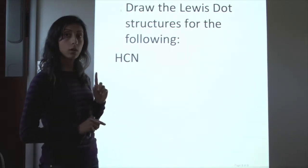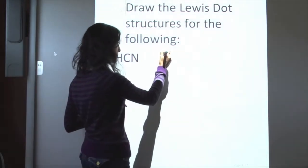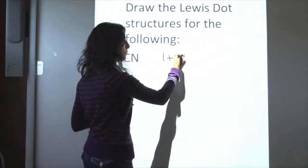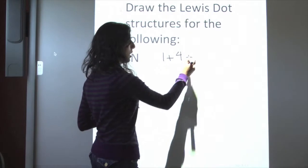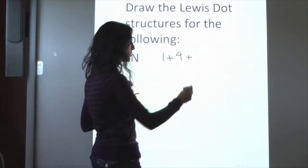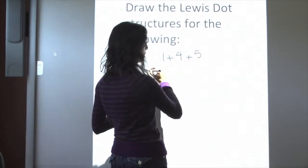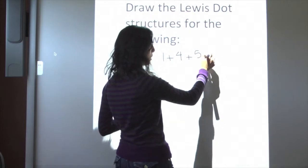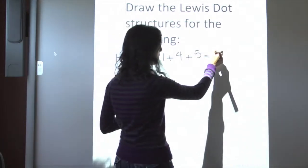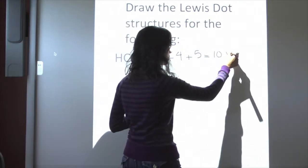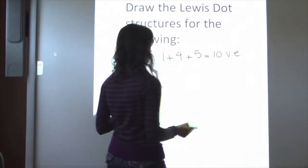Hydrogen has one valence electron, carbon has four valence electrons, and nitrogen has five. So we know that we have to have a total of ten valence electrons in our structure.